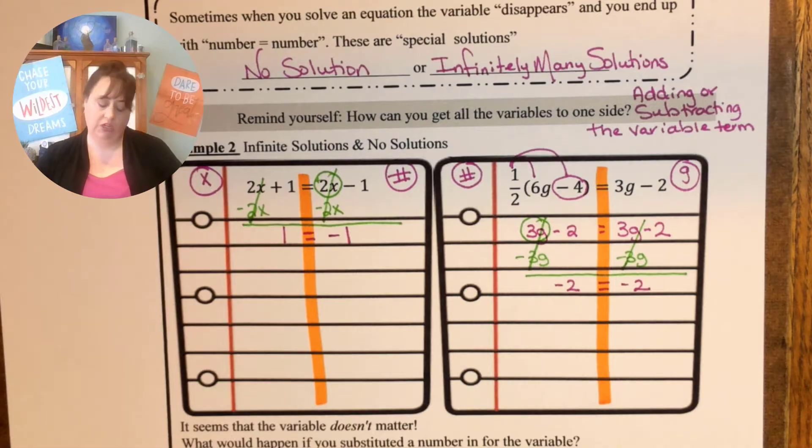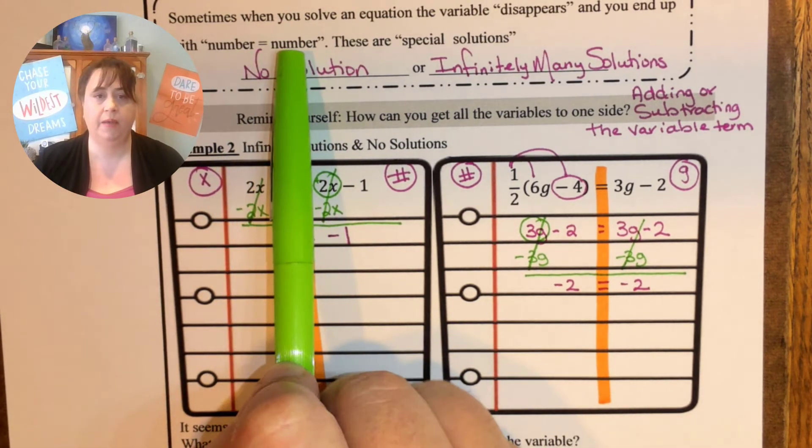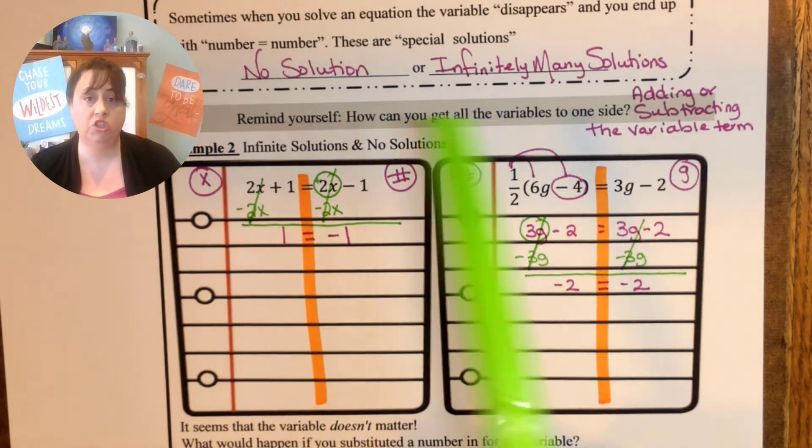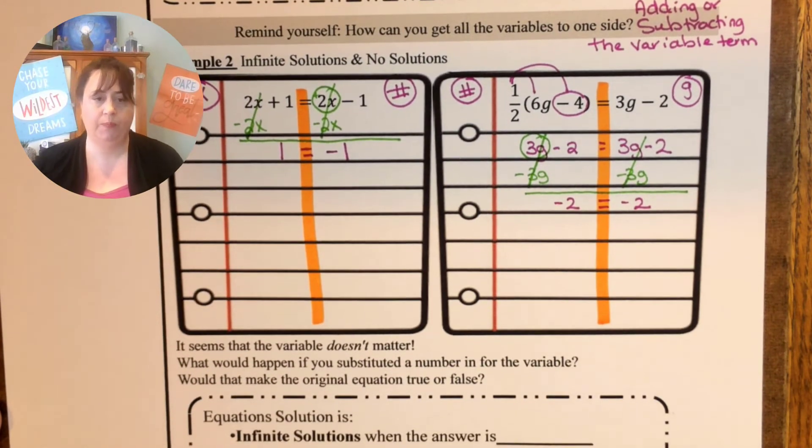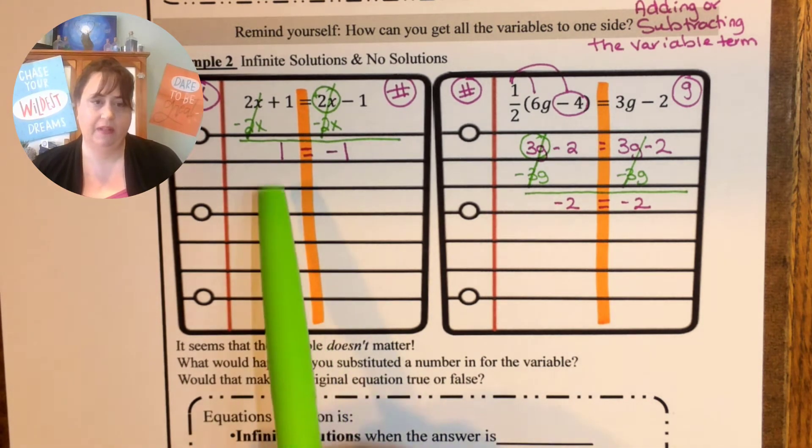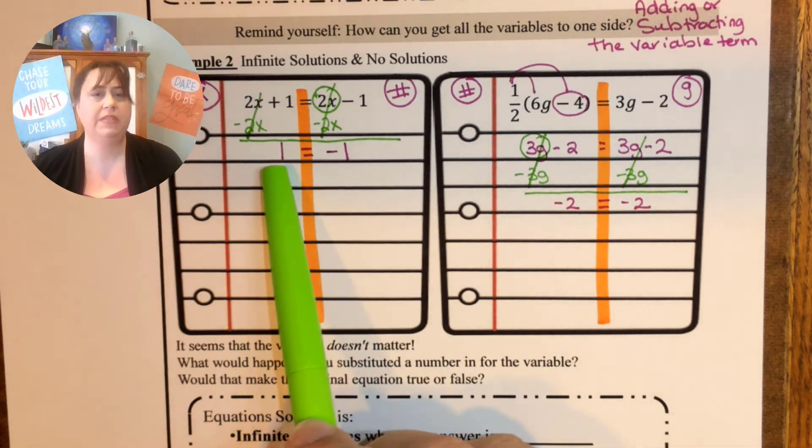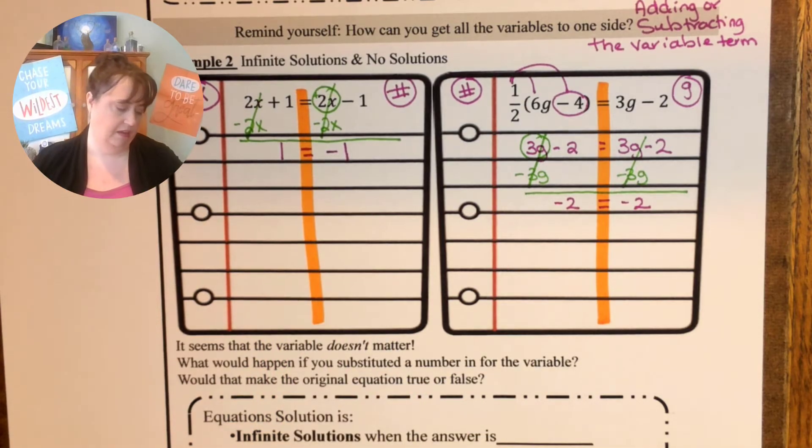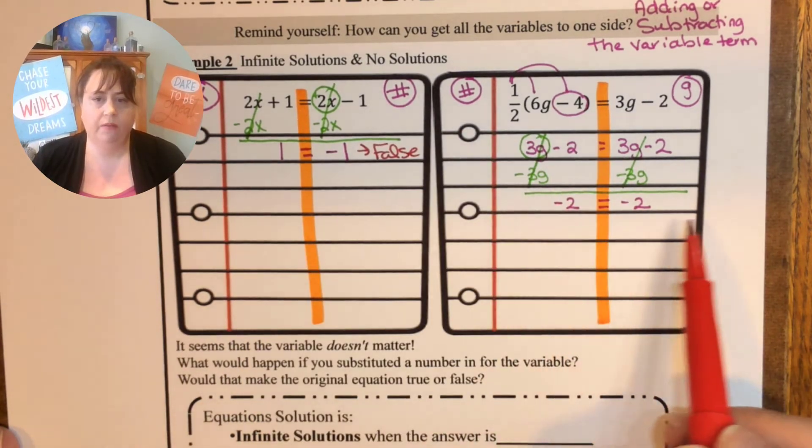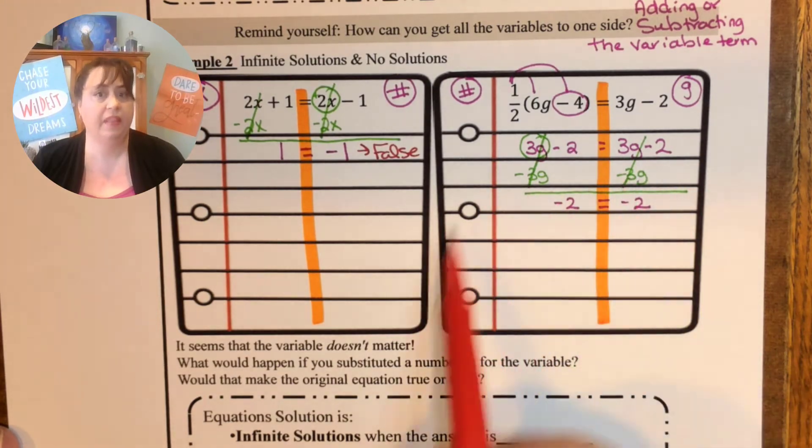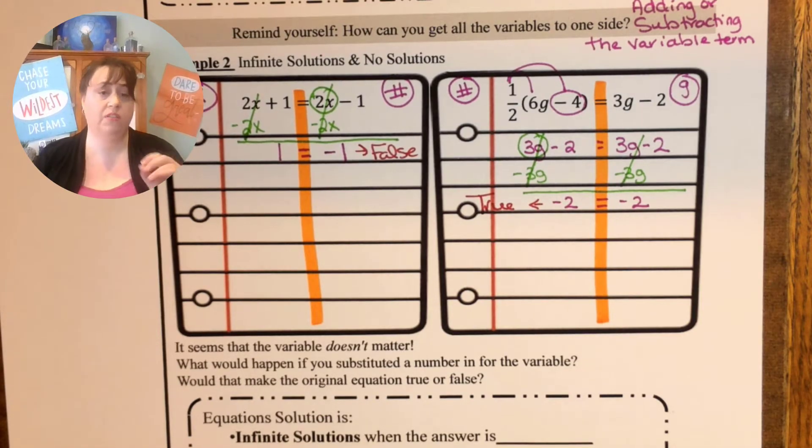So I have these two situations now where my variables have gone away. I'm left with numbers. So that comes back to this idea: number equals a number and so these are special solutions. One of these is going to be no solution and one of these is going to be infinitely many solutions because it seems like the variable doesn't matter. So it seems like the variable doesn't matter. What would happen if I substituted a number? Before we go to this let's just talk about this statement. Is this a true statement or a false statement? Hopefully you're all looking at that saying that is a false statement. Let's look at this one though. What would you say about this one? That is a true statement. So that true and that false is going to be important in a little bit.